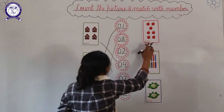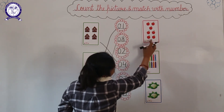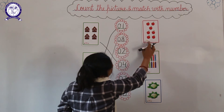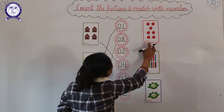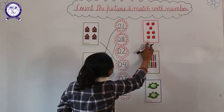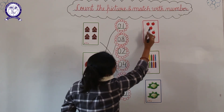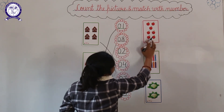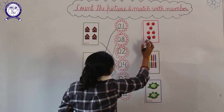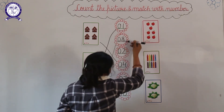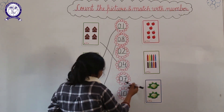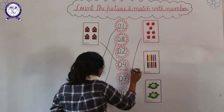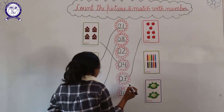And next picture — which picture is this? These are apples. And how many apples are there? 1, 2, 3, 4, 5, 6, 7. And where is 7? Here. And match with 7.